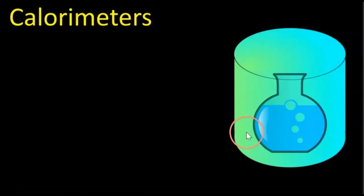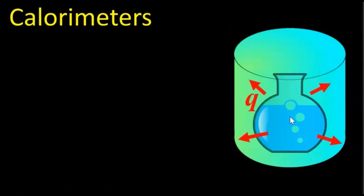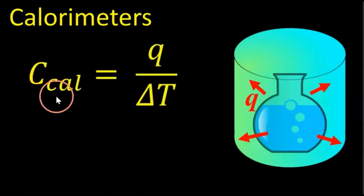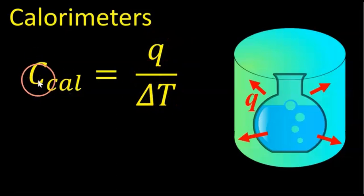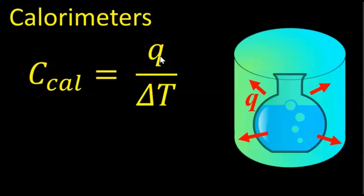This is a calorimeter. It's basically like a big insulated box and you have your reaction inside. When the reaction or mixing occurs, we have heat transfer either to the calorimeter or it could go the other way around. The heat capacity of the calorimeter is defined as the energy transferred to it as heat divided by the change in temperature.